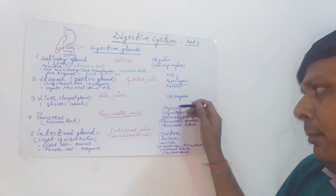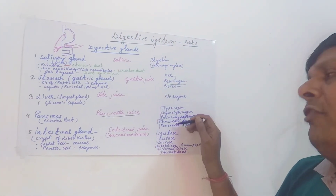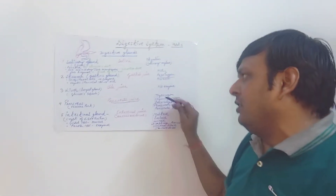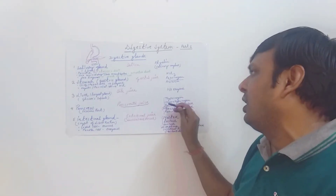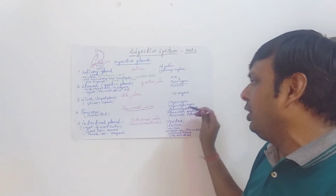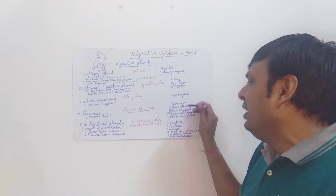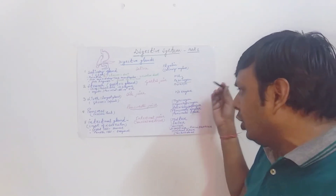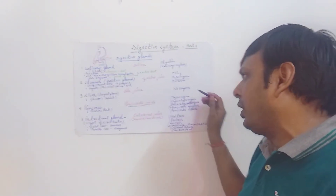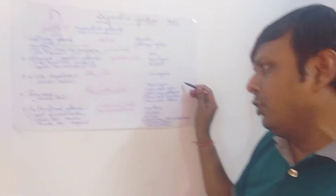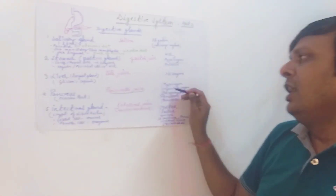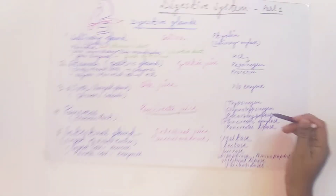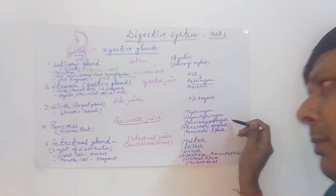Pancreatic juice has a variety of enzymes which help in digestion. The protein-digesting enzymes are trypsinogen, chymotrypsinogen, and procarboxypeptidase — these are inactive enzymes. They are converted by enterokinase into their active forms: trypsinogen is converted into trypsin, chymotrypsinogen into chymotrypsin, and procarboxypeptidase into carboxypeptidase.